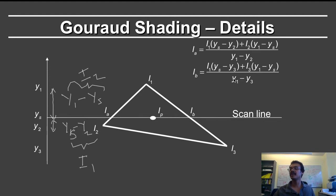We can similarly get a formula for iB, which will be equal to i1 times, in this case, ys minus y3, and i3 times y1 minus ys, and now you'd normalize by y1 minus y3.